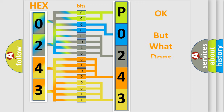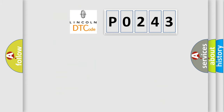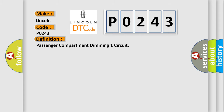We now know in what way the diagnostic tool translates the received information into a more comprehensible format. The number itself does not make sense to us if we cannot assign information about what it actually expresses. So, what does the diagnostic trouble code P0243 interpret specifically, according to car manufacturers? The basic definition is: Passenger compartment dimming one circuit.